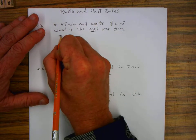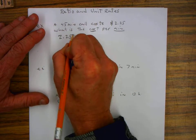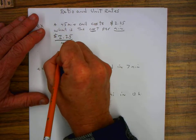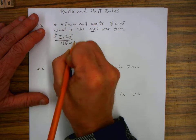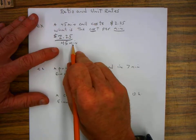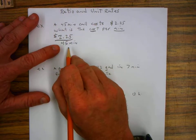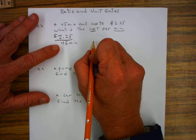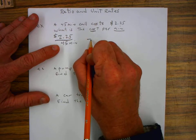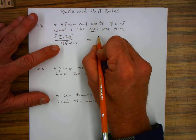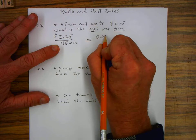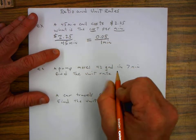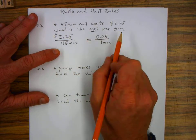Well, we know that it costs $2.25 for 45 minutes. When we want to know the cost per minute, we have to take $2.25 and divide it by 45. And when I do that, we realize that it's equal to exactly 0.05 cents per one minute. So that's our cost per minute.